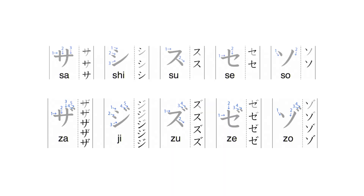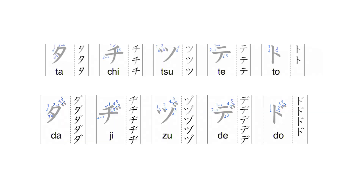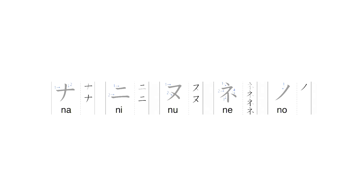Moving on to the S column: Sa, Shi, Su, Se, So. With the Dakuten it becomes Za, Ji, Zu, Ze, Zo. Then we have the T column: Ta, Chi, Tsu, Te, To. With the Dakuten the T column becomes Da, Ji, Zu, De, Do. Then we have the N column, which is not very special — it stays as Na, Ni, Nu, Ne, No. A quick word you can make with the N column is 'Nani,' meaning 'what.'